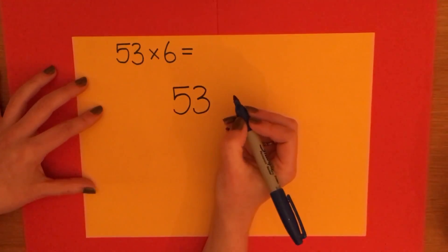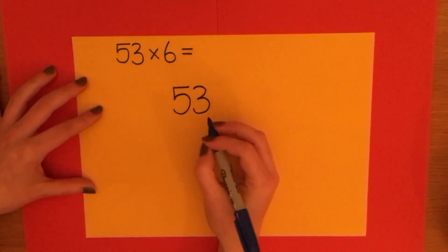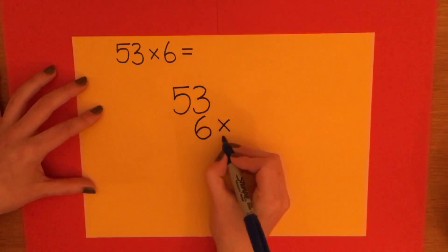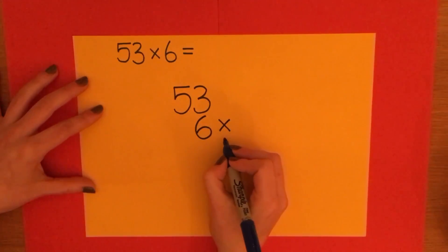And then the number I'm multiplying by, the 6, is going to go on the next row. And remember to put your sign in so everyone knows what calculation you're doing.